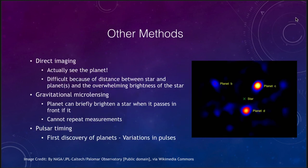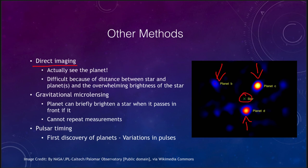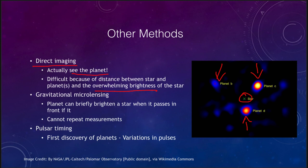Some other methods include direct imaging. If we block out the starlight and look in the infrared, we can actually see the planets — several planets orbiting around the star. We're not looking at a wavelength where the star is easily visible, but where the planets are. In these cases we are seeing the light from the planet itself. Any sketch of what an exoplanet looks like is always an artist's conception. This method is difficult because planets are often very close to their star and the star is overwhelmingly bright, so direct imaging of exoplanets is rare.